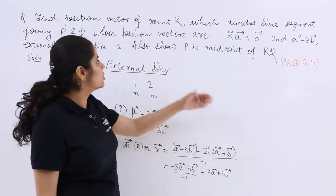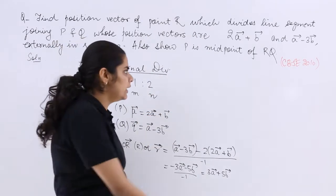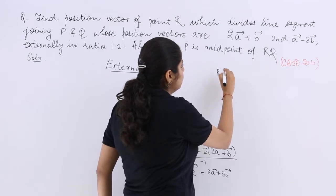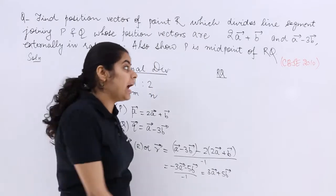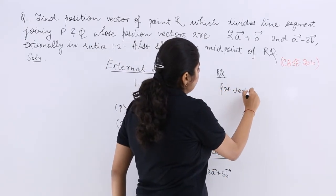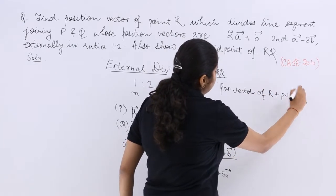But the second part of the question is you have to show that P is a midpoint of RQ. So let us first find RQ related thing. So RQ if I add the position vector of R plus position vector of Q.